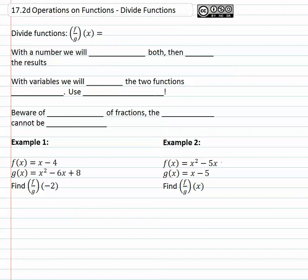In this video, we're going to look at our fourth operation on a function, and that is to divide functions. Dividing functions, we use the notation f over g of x, which simply means take f of x and divide it by whatever g of x is.